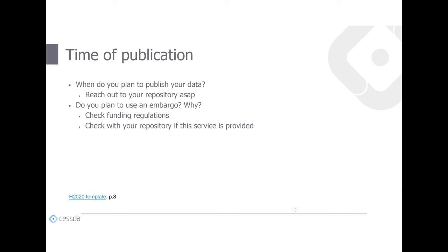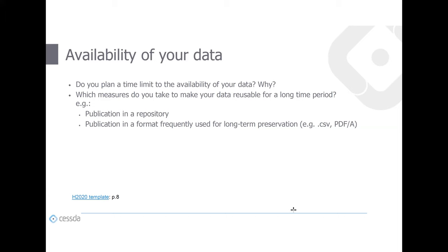If you plan to use an embargo on your research data, please check with your funder for regulations and with your repository if this service is provided. Availability is the next important aspect — do you plan a time limit on the availability of your data, and why? Measures to make data reusable for a longer time period include publication in a repository or in formats suited for long-term preservation like CSV files or PDF/A files, which do not rely on newer software versions as much as Stata or SPSS files.